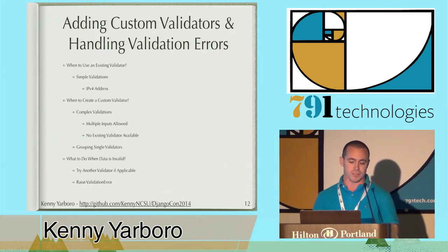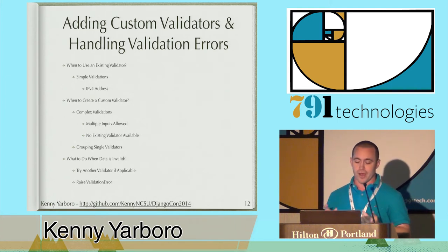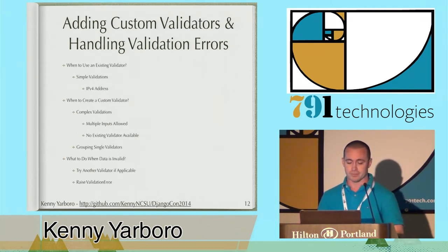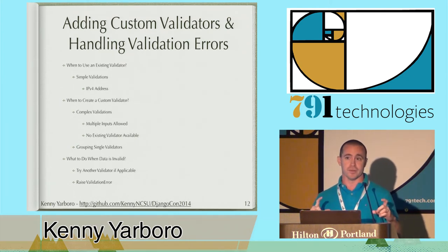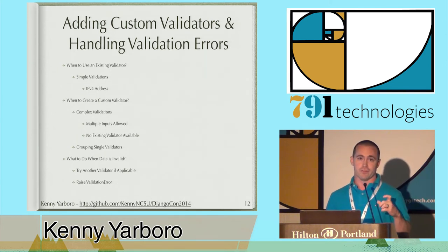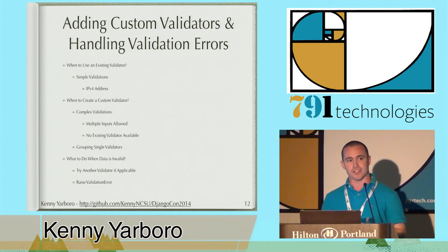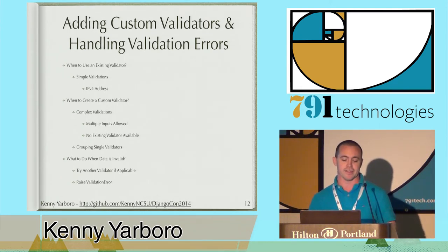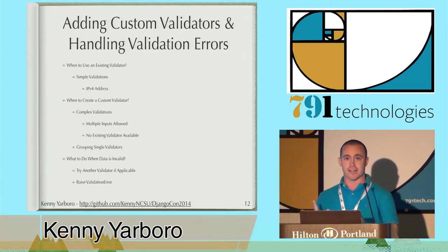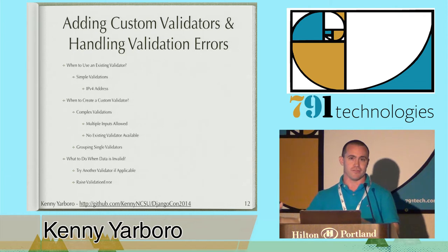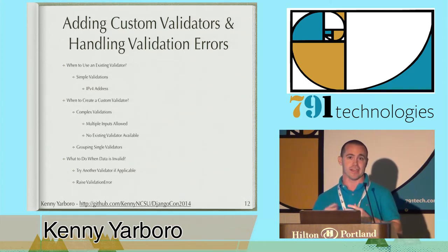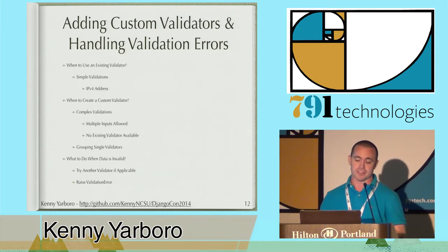One thing we were also able to do was group validators together. For your models you can declare a validator, and I'd point it to a single group validator that would call other validators internally. If any of those throws a validation error, that's raised. But you can put in logic so that if data passes any one of five validators in the group, it's okay. If you deem it invalid, you return the validation error with data explaining why it was invalid, so the user can adjust their input and have a successful request on their next attempt.